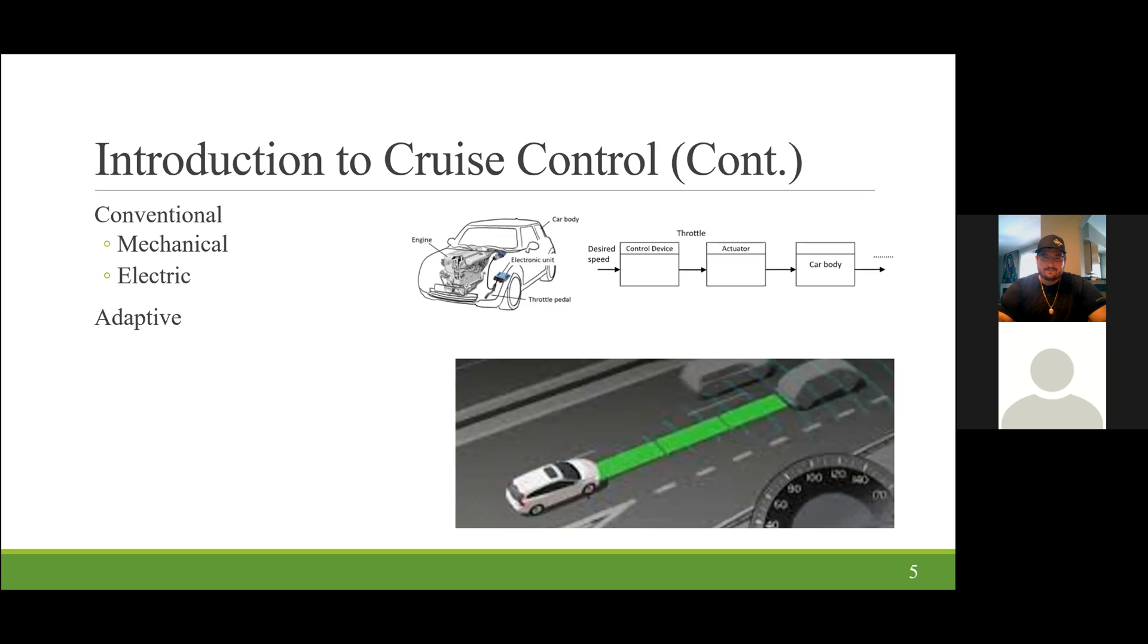Mechanical cruise control systems use vacuum pressure and actuators to change the throttle position of the vehicle. In recent years, vehicles have adapted electronic cruise control systems. In this system, the throttle position is changed electronically with sensors, monitors, and engine management computers.